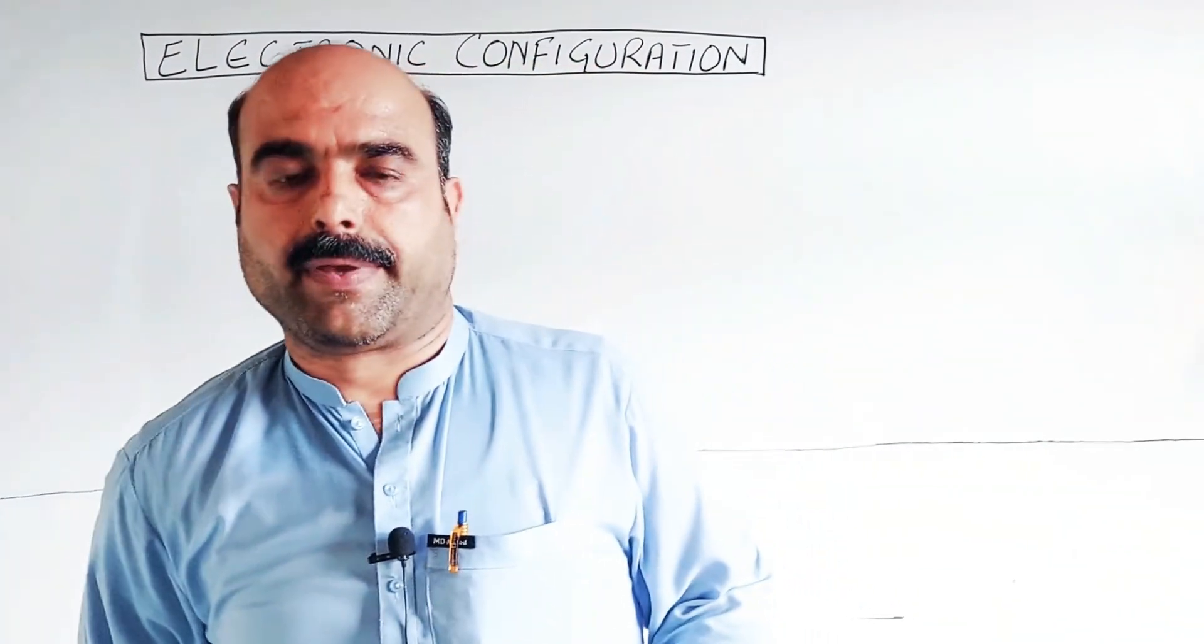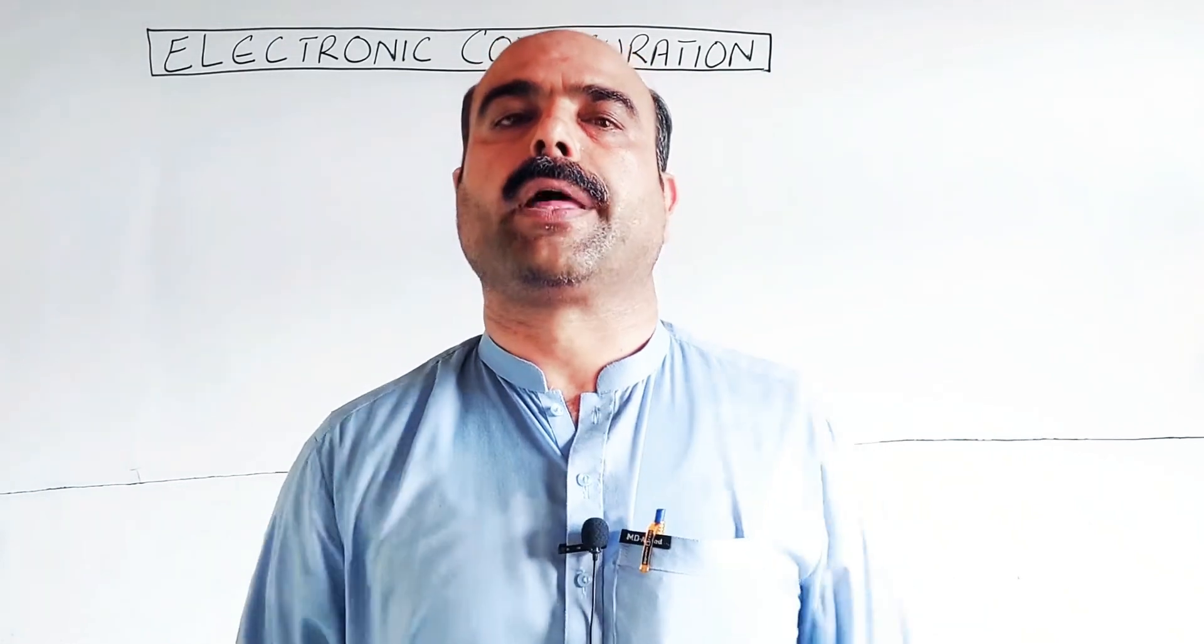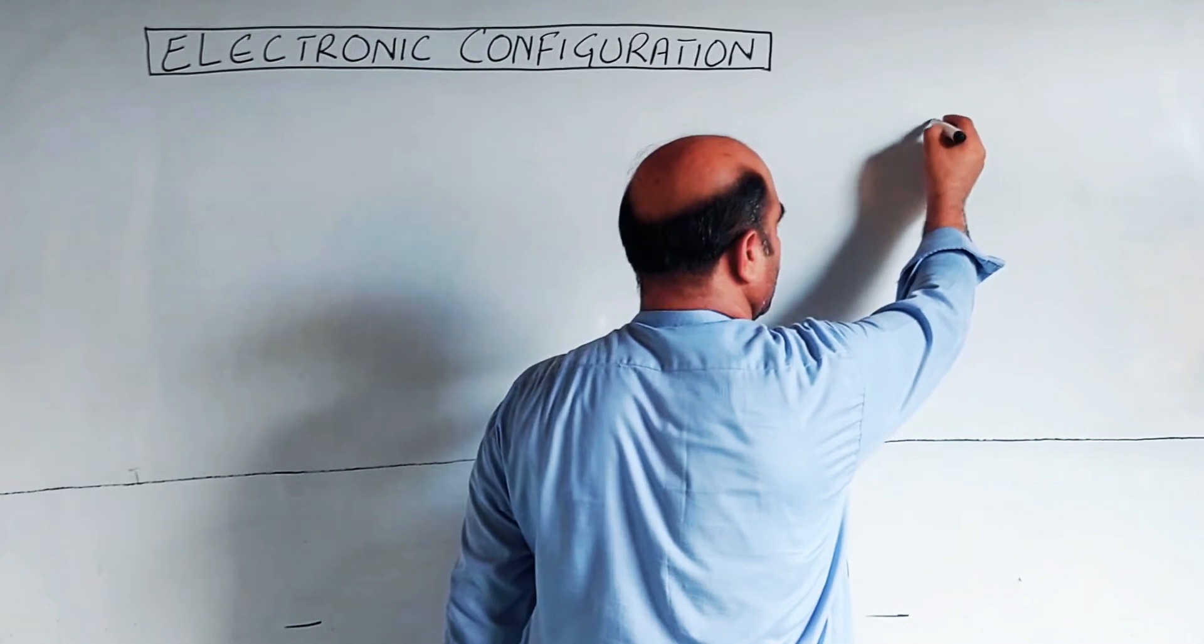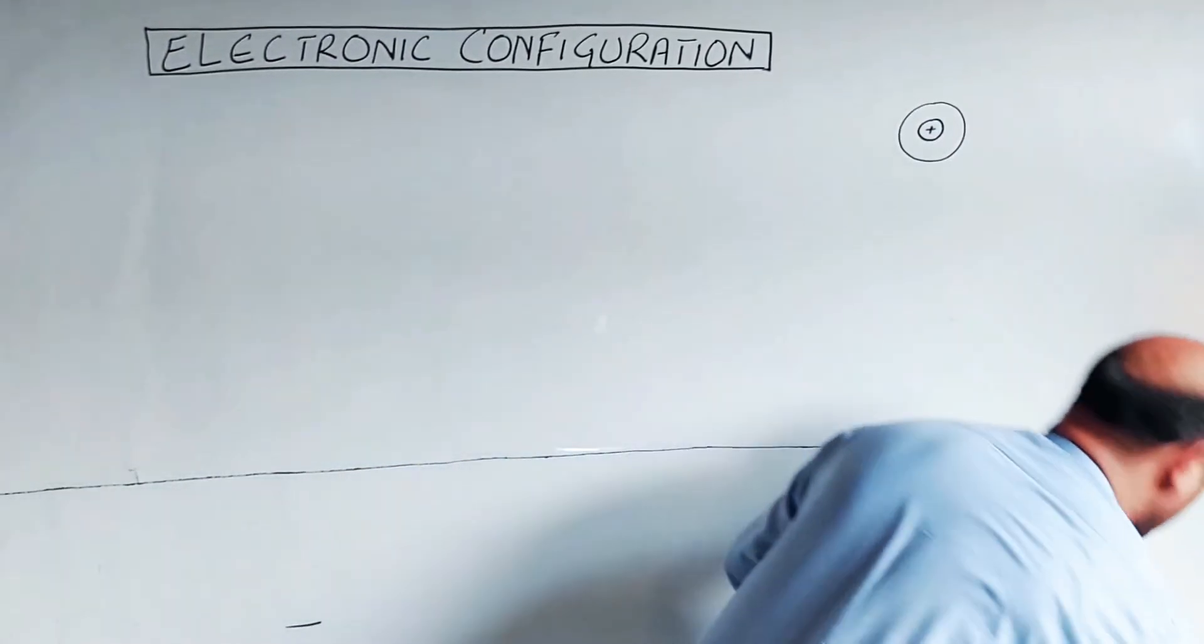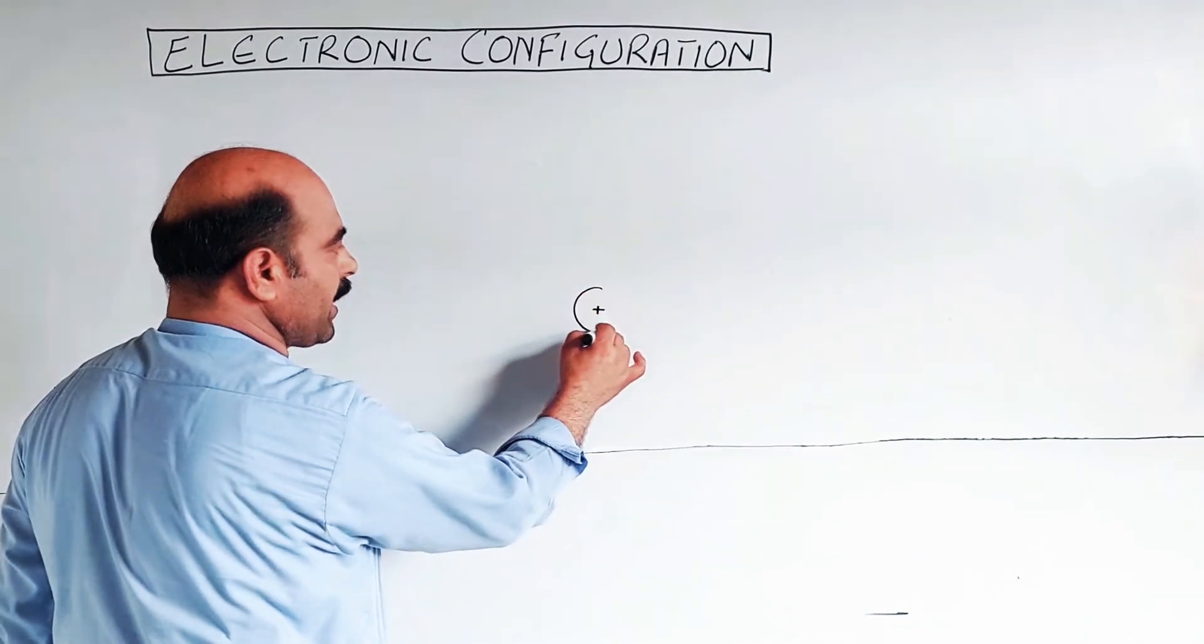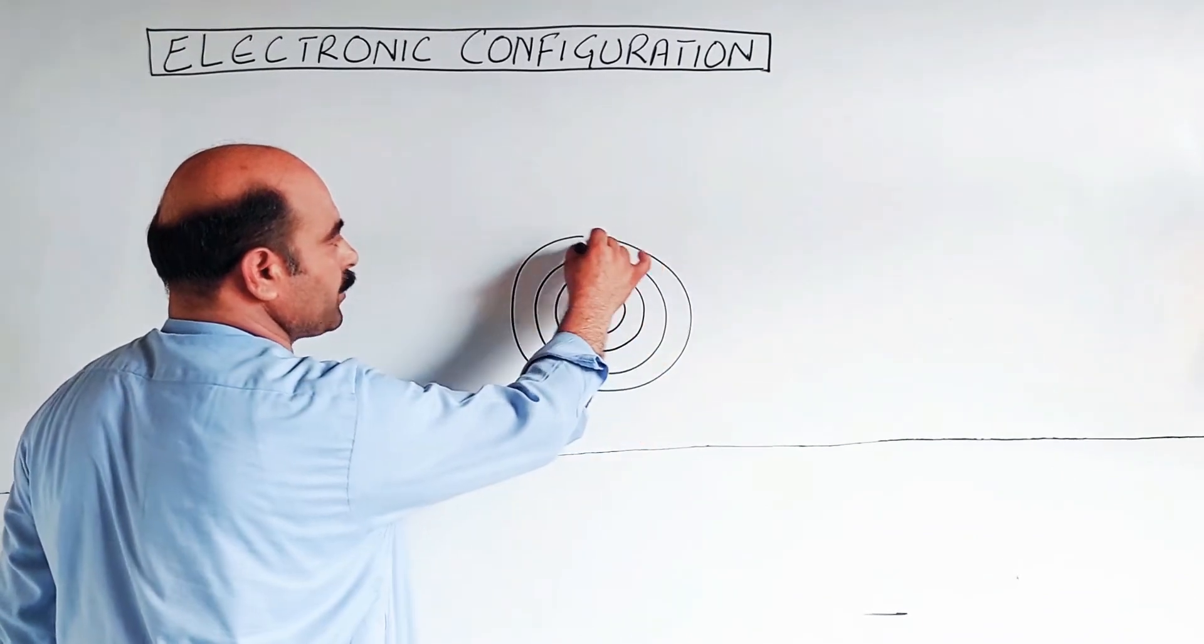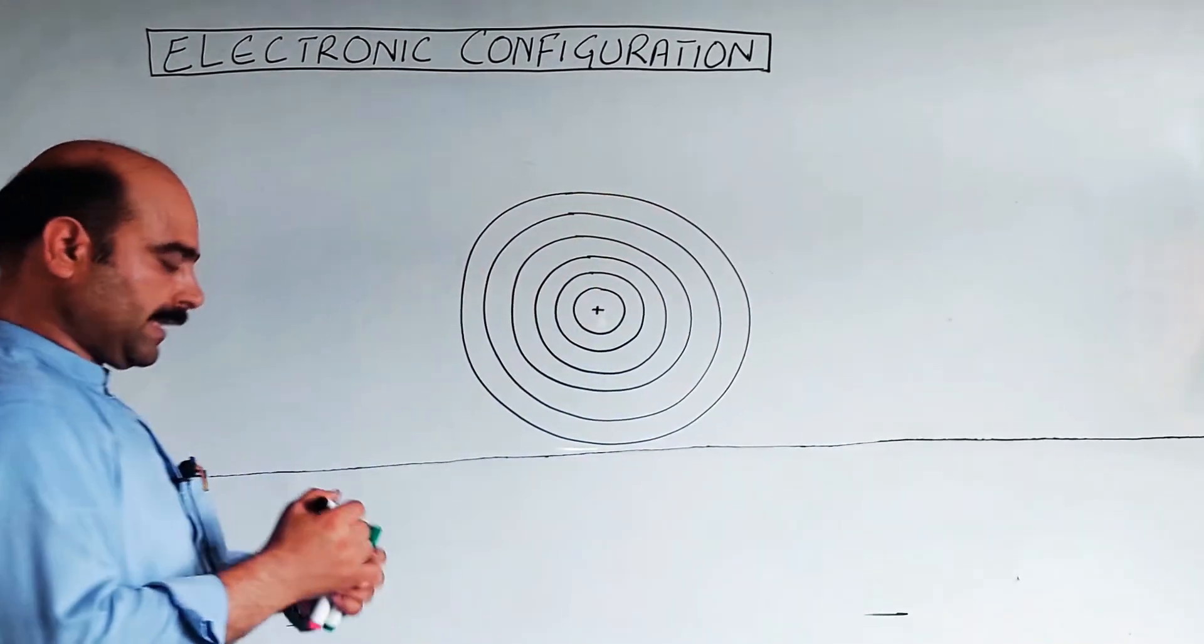Students, electronic configuration - Bohr said that electrons are revolving around the nucleus in fixed circular paths called orbits. The Bohr model shows electrons revolving around the nucleus. These fixed circular paths are called orbits or shells or energy levels.